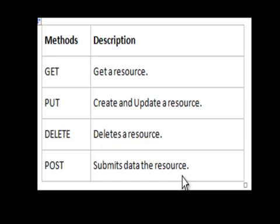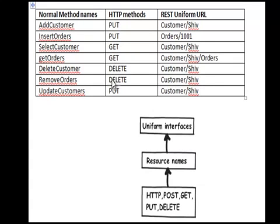By combining the standard HTTP methods with your resource names you can have uniform interfaces. For example, if anybody calls a PUT on customer/shiv, it will add Shiv to the customers. If you want to get customer data, you call GET on customer/shiv. Uniform interfaces are nothing but the combination of HTTP protocol methods — POST, GET, PUT, DELETE — with your resource names. By doing this you achieve simplified communication. This is the third important principle of REST.